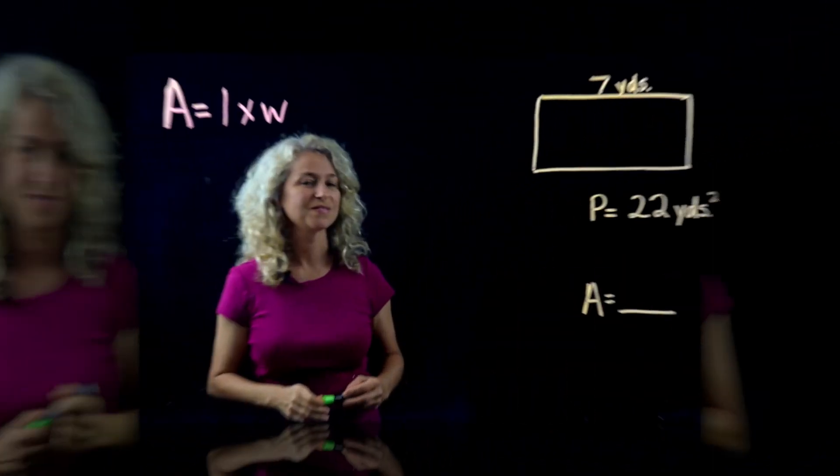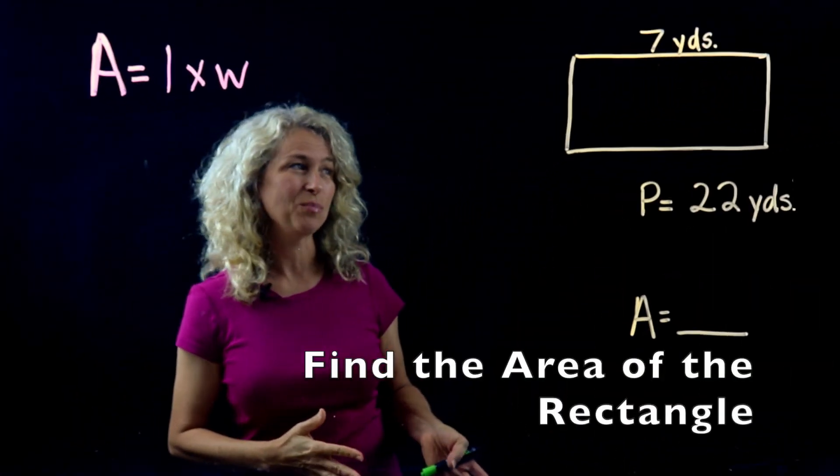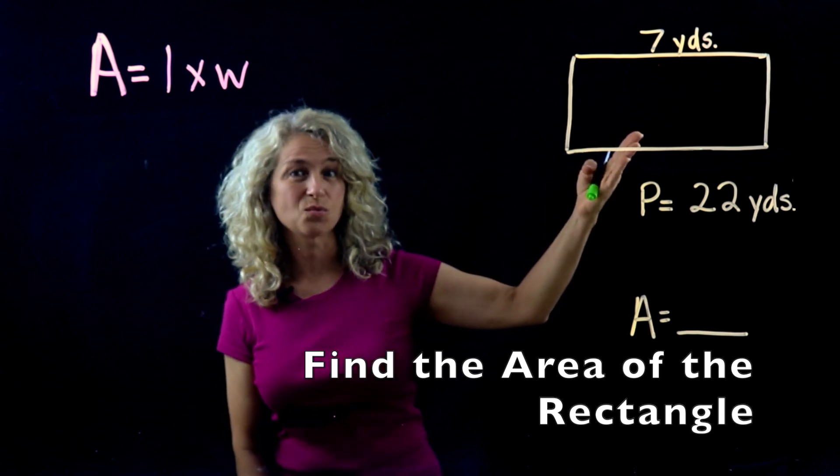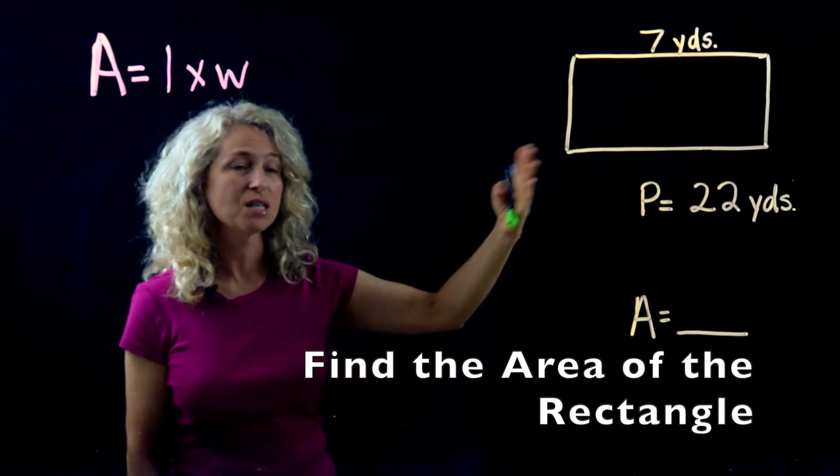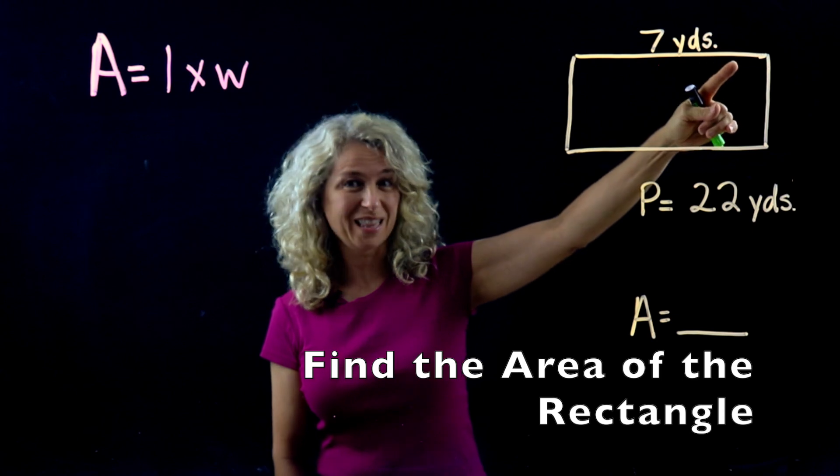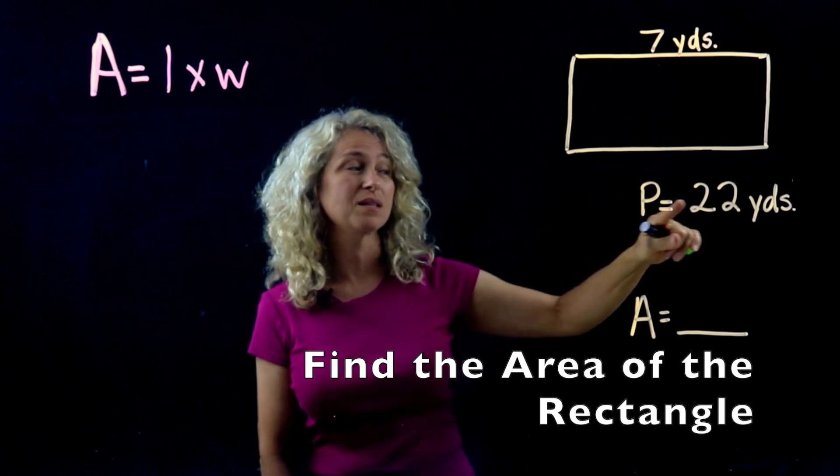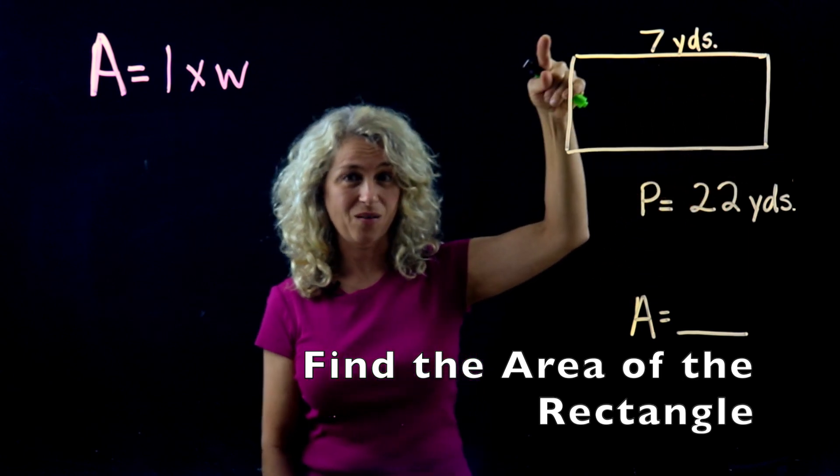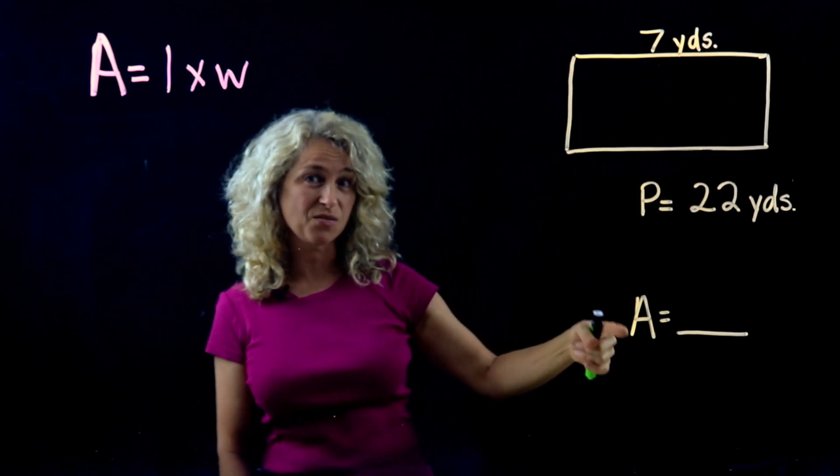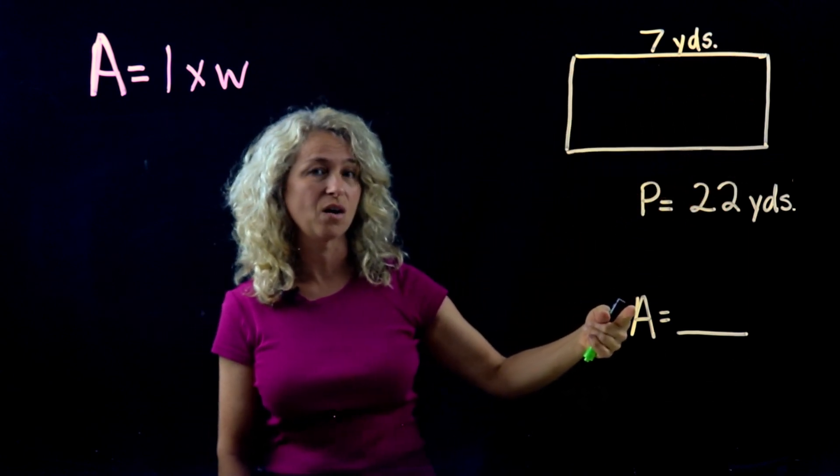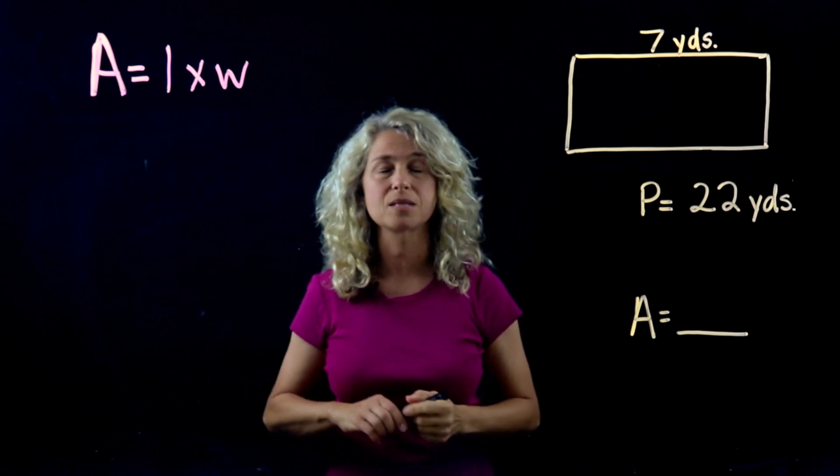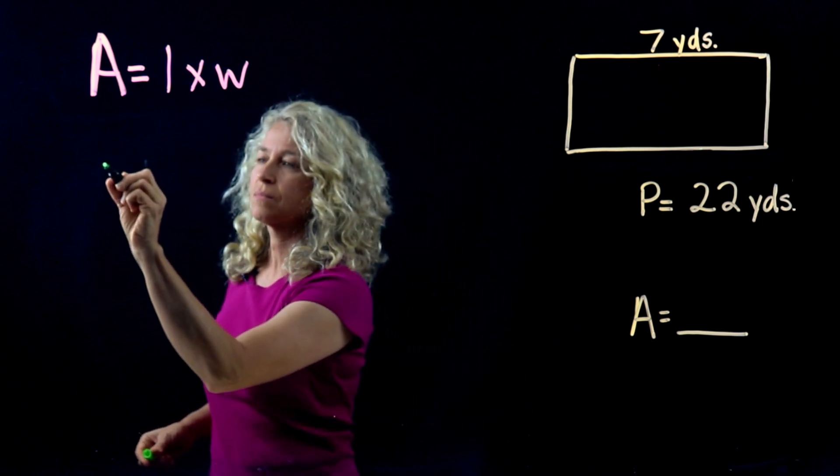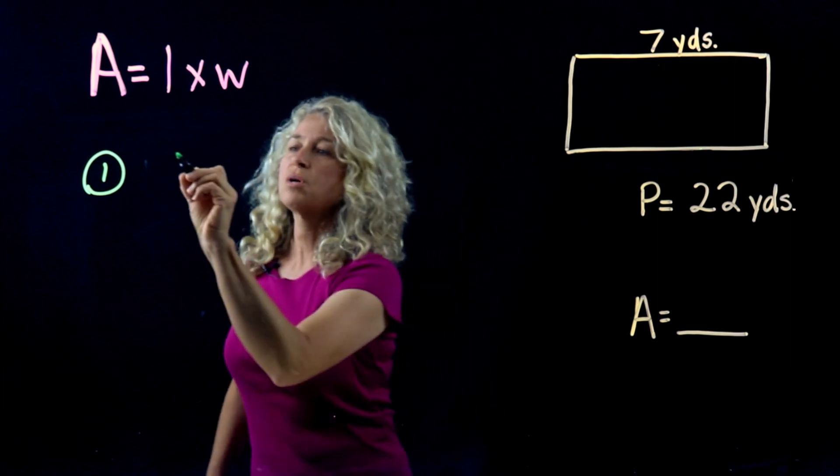So in this example, we are told that this is a rectangle. This one's a little different. Notice that we're given one length, we're told what the perimeter is. Remember, perimeter is all the way around, but we are asked to find the area.